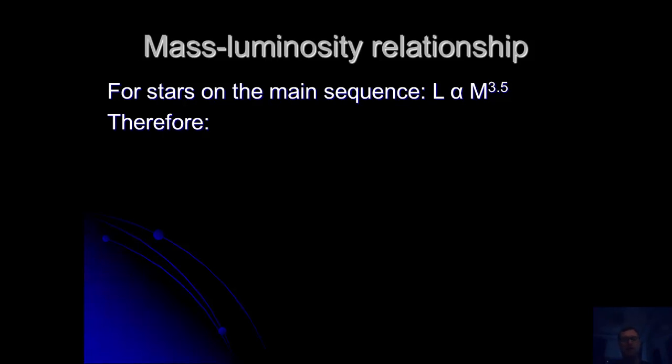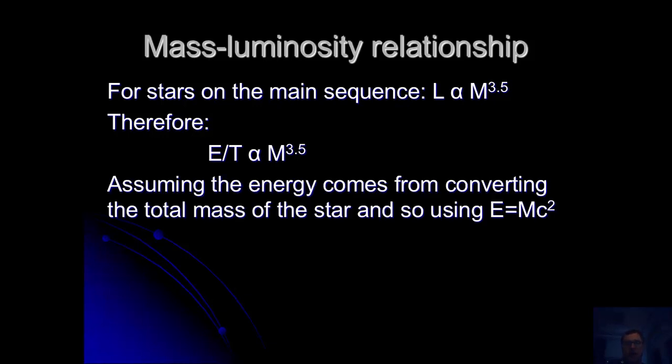This can be used to identify some more information. If we think about the luminosity as just being the amount of energy released divided by the period of time, and assuming that the energy all comes from converting the total mass of the star using E = mc², that means that mc² divided by the time taken is proportional to mass to the power of 3.5. We can cancel masses on both sides. We know that c² is a constant, so we can ignore that. Therefore, T, which is the amount of time the star is converting energy, is proportional to 1 over the mass to the power of 2.5.